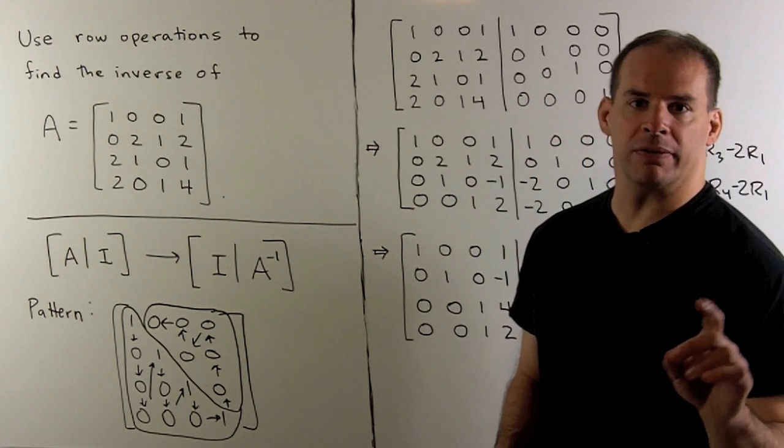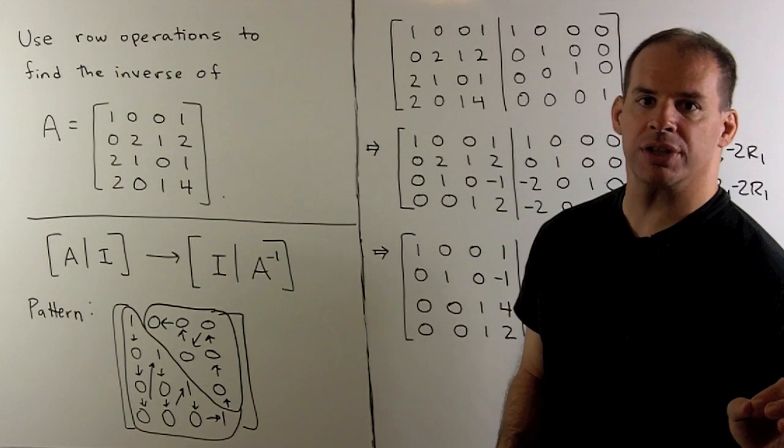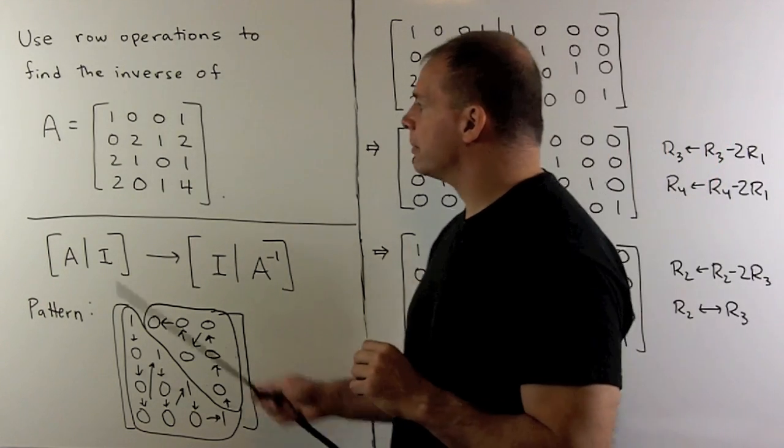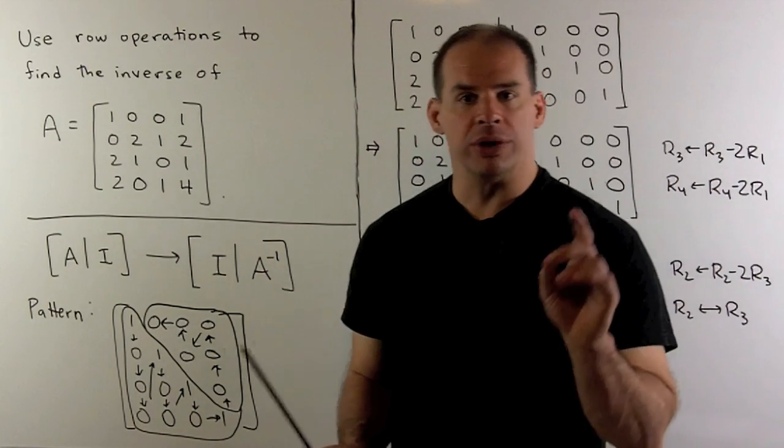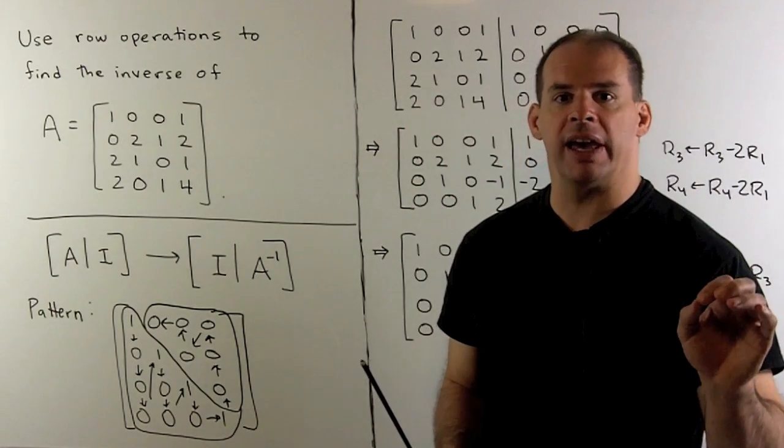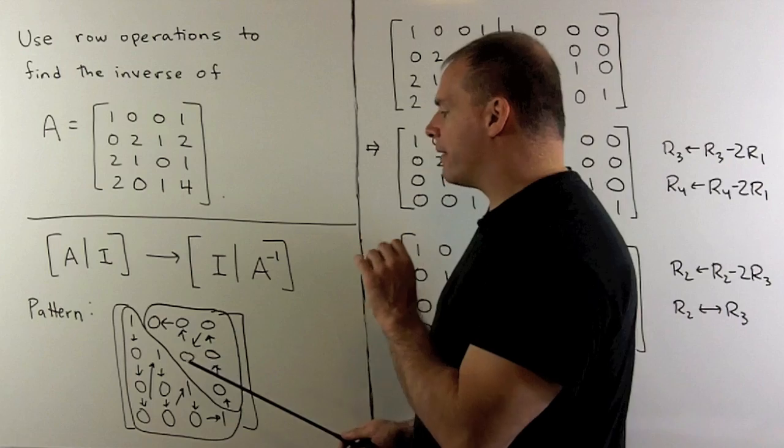Here's another example of finding the inverse of a matrix using row operations. In this case, the matrix to invert is four by four. We assume you've mastered the three by three case; here we're just going to have a little extra bookkeeping.